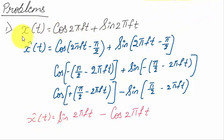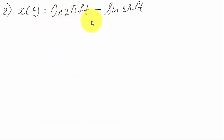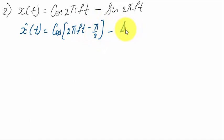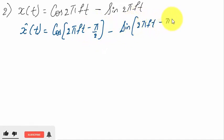For x(t) = cos(2πft) + sin(2πft), the Hilbert transform is x̂(t) = sin(2πft) − cos(2πft). Next problem: given x(t) = cos(2πft) − sin(2πft), find x̂(t). The Hilbert transform is x̂(t) = cos(2πft − π/2) − sin(2πft − π/2). Taking minus as common for each term, we get cos(π/2 − 2πft) − sin(π/2 − 2πft) with sign adjustments.